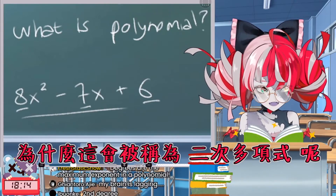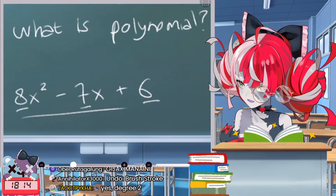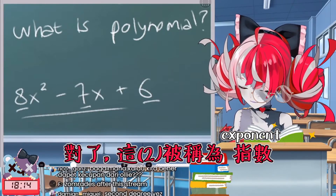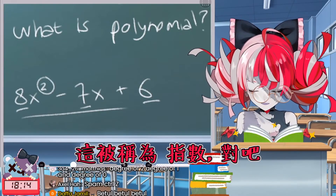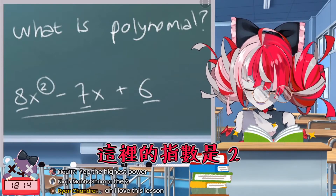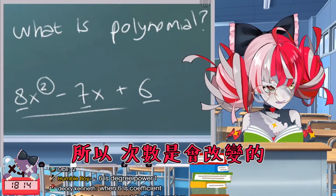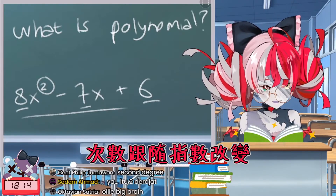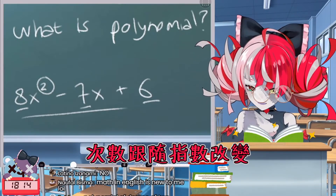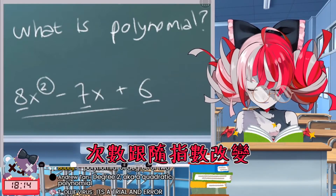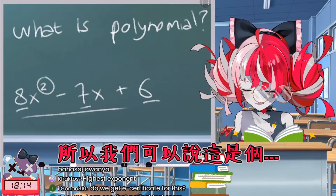I forgot — I'm sorry. If I remember correctly, this polynomial is called degree two. Why is it called degree two? Because this thing — the exponent — is two. The degree changes based on the exponent.